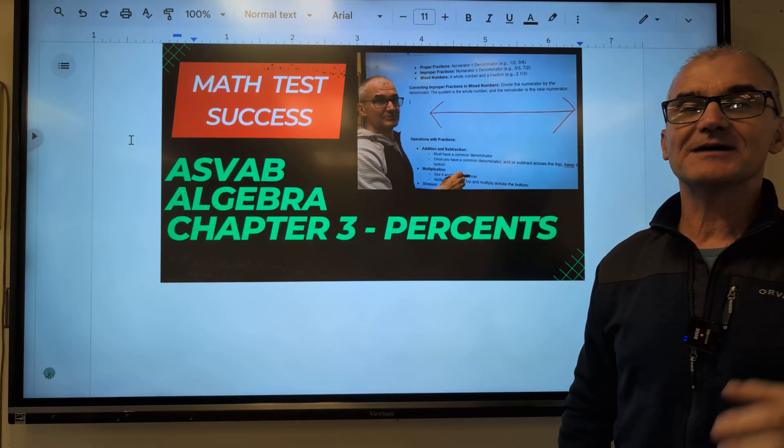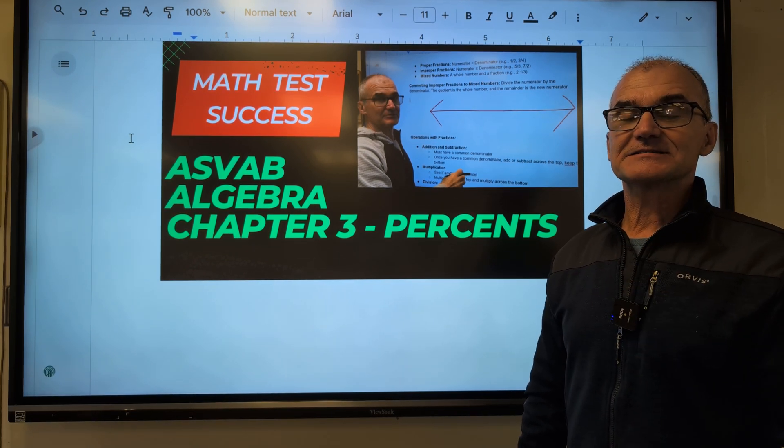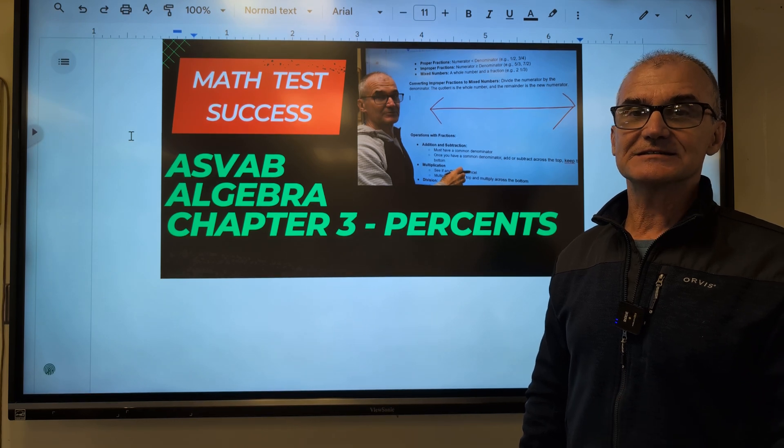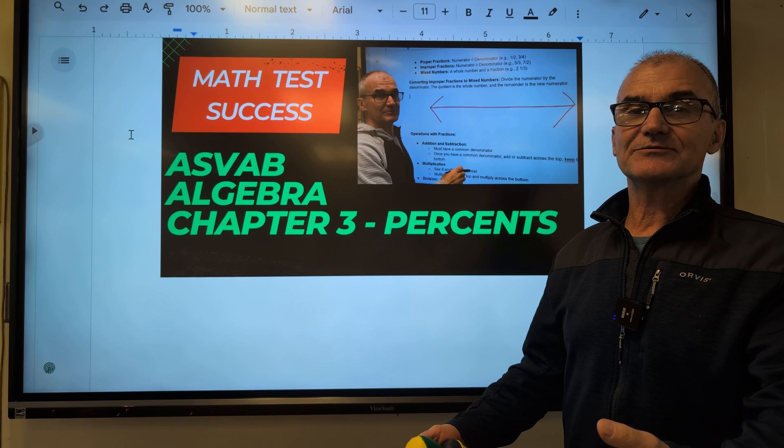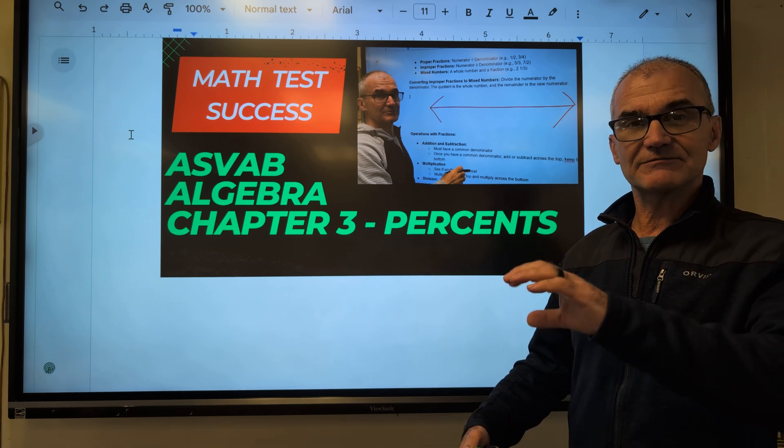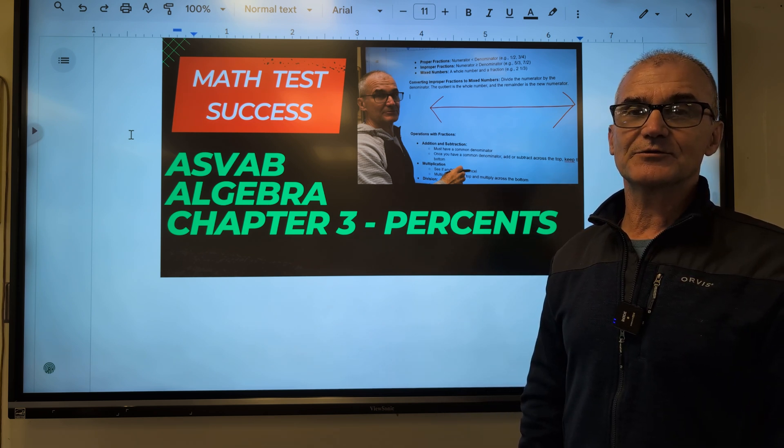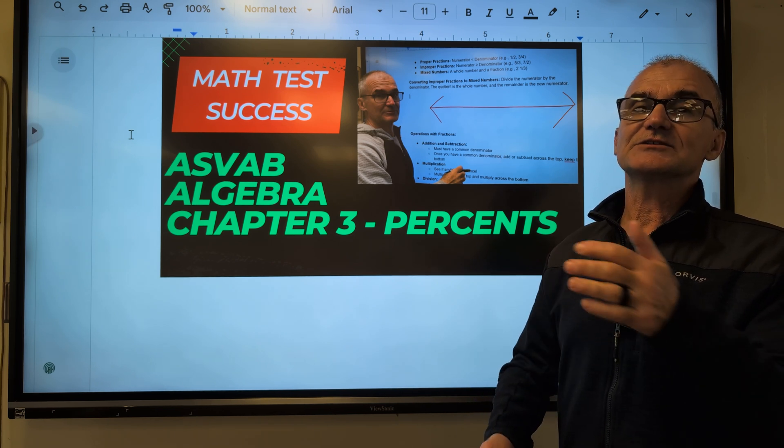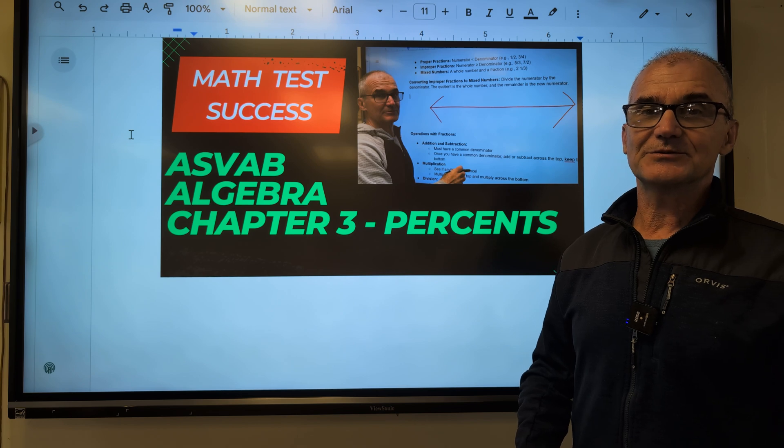Hey, fellow problem solvers, Colfax Math here. Today we're working our way through our book, Math Test Success, ASVAB Algebra. Today is Chapter 3, Percentages. If you haven't bought the book, make sure you have a notebook out in front of you and a pencil. As we go through, you want to pause the video, take your own notes. I've left spaces on this document to take notes, and then make sure you do the problems before I do them. You can't learn how to juggle by watching me juggle, just like you can't learn math by watching me do math. You've got to practice, so make sure you're doing all the problems.